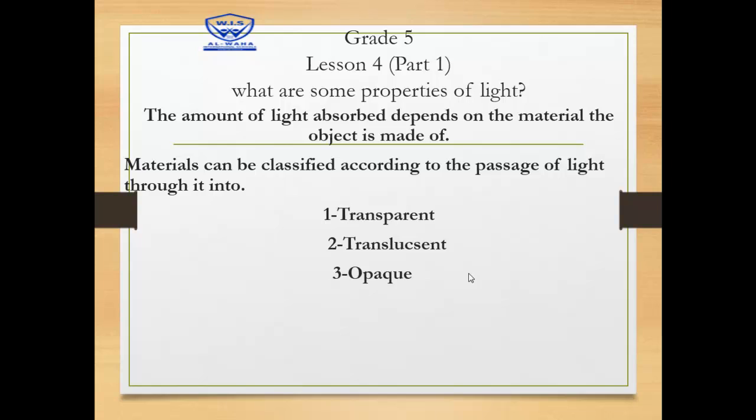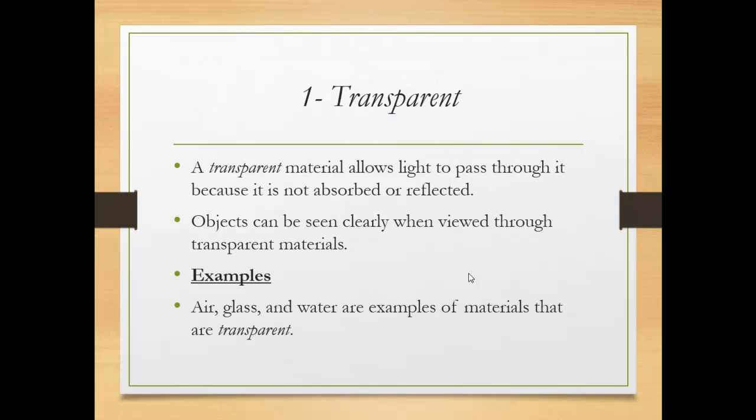The amount of light absorbed depends on the material that the object is made of. We can classify material according to the passing of light through it. We have three types of material according to the passing of light: transparent, translucent, and opaque material.